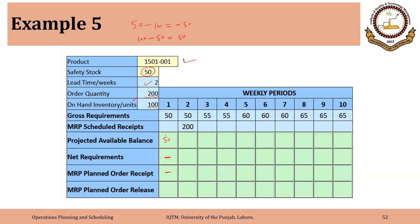In week 2, we are having a scheduled receipt of 200. The net requirements are negative because the requirement is 50 and the total supply is 250 — 50 from the previous period and 200 from this period. Our logic is that we place a planned order release only when there is a positive net requirement. So there is no planned order receipt here, and we will be left with 200 units by the end of week 2.